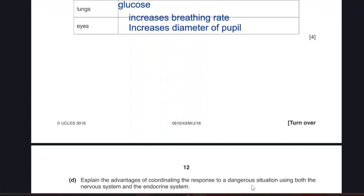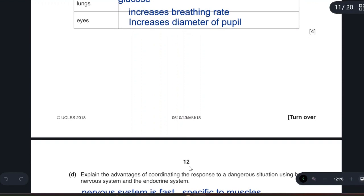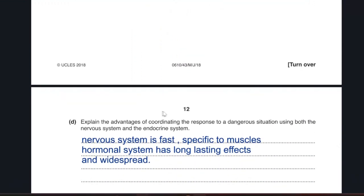Explain the advantage of coordinating the response to a dangerous situation using both the nervous and the endocrine system. I will write the advantages from the nervous system and the advantages from the endocrine system. The nervous system is fast and it is specific to muscles. If you want a specific muscle to contract the impulse will go specific to this muscle. However, the hormonal system has long lasting effects and it is widespread which means that it can reach different organs at the same time if I need it.